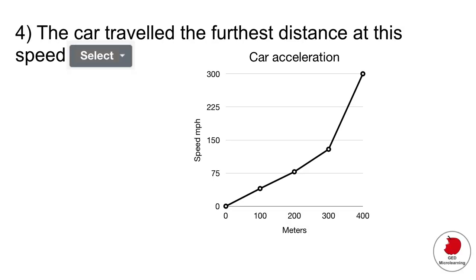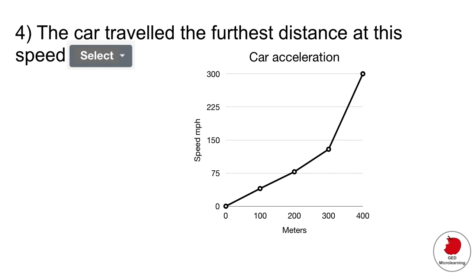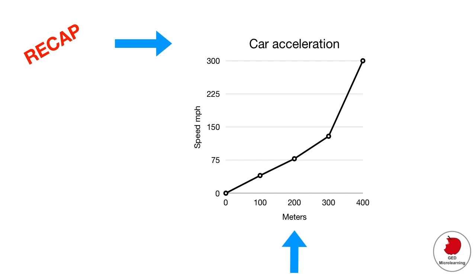The next type of question is one of these drop-down menu questions, where you click on the drop-down menu and it gives you options for the answer. It usually entails you interpreting data from a graph. It says the car traveled the furthest distance at this speed. The first thing, as always, let's remind ourselves how to read a graph. We look at the title—this is a graph about car acceleration. In the y-axis, it looks at speed in miles per hour, and in the x-axis, you can see it looks at distance traveled in meters.